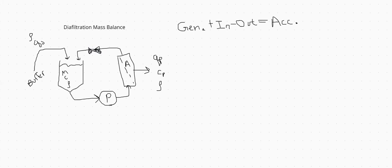What's different here compared to the concentration mass balance derivation is that we now have buffer being added into the retentate vessel at a rate qd, with density rho. A key point is that qd equals qp, so the liquid level in the retentate vessel is constant — not changing — whereas during the concentration step the liquid level is going down.